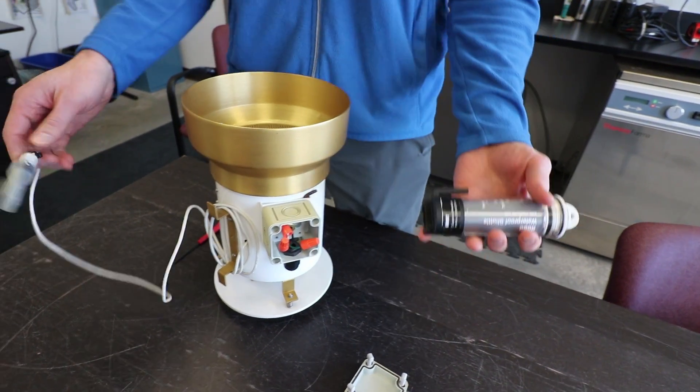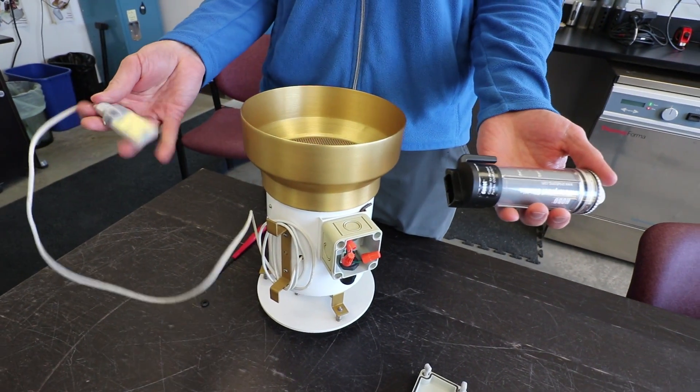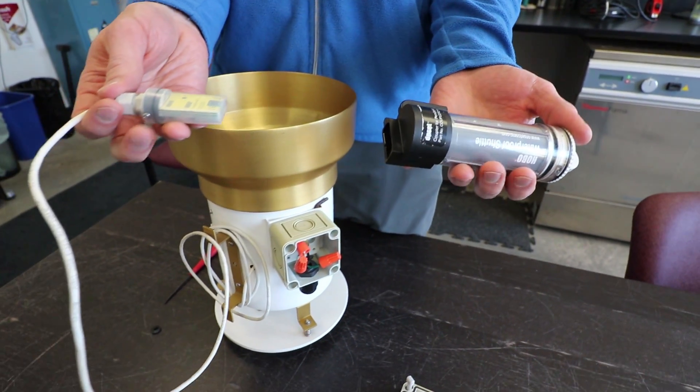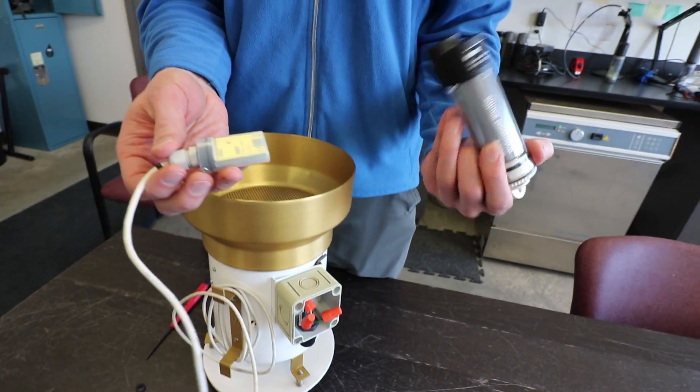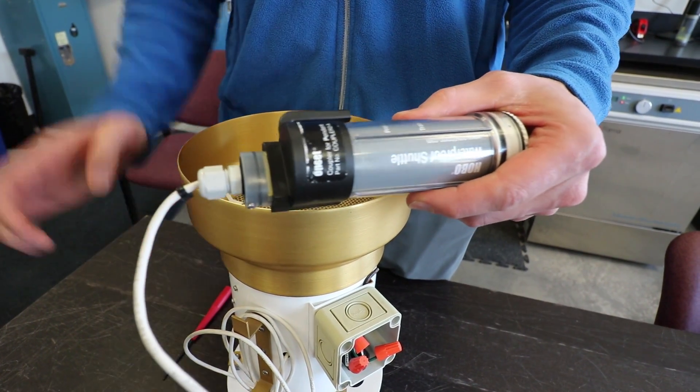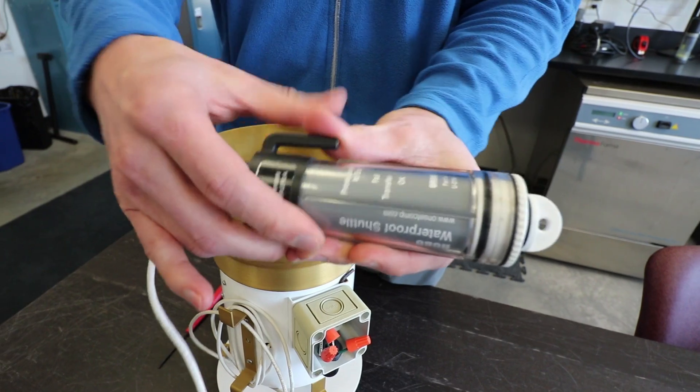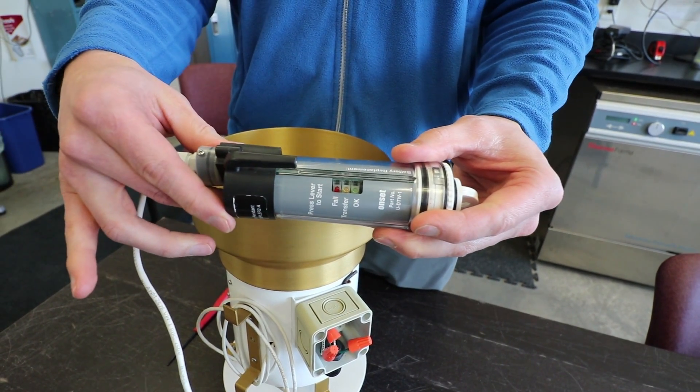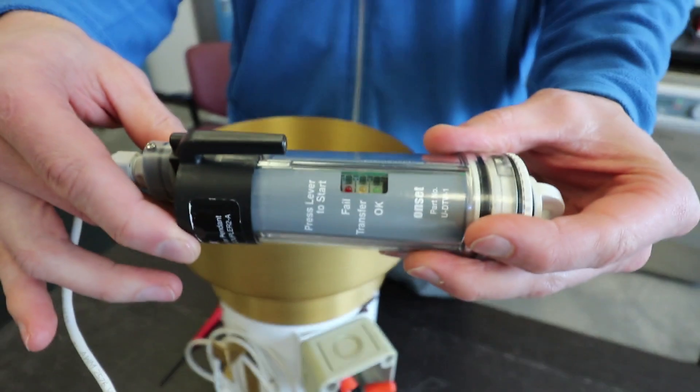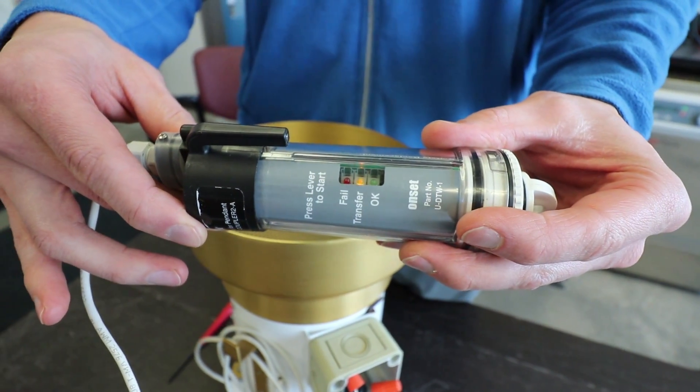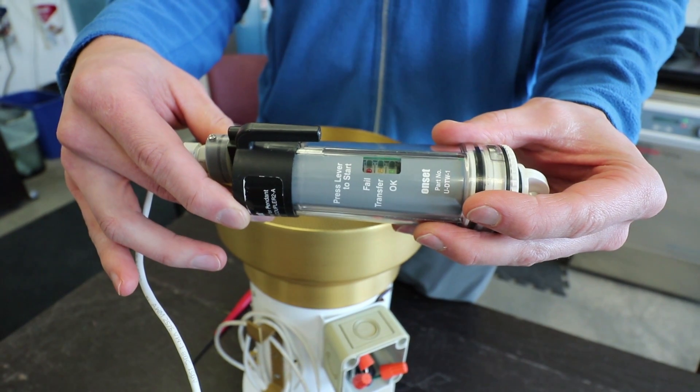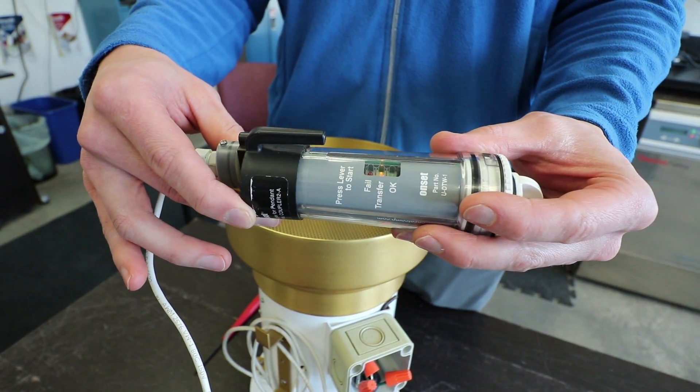With this data logger we use a shuttle to collect the data. Once a month we visit each rain gauge and insert the pendant data logger into the shuttle and press the switch to transfer the data to the shuttle. Once it's done blinking and gives us a green light, we can take the shuttle back to the lab and transfer the data from the shuttle to our computer.